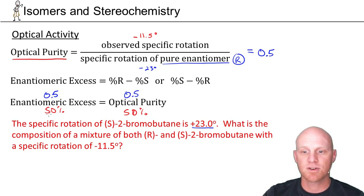We have a 50% enantiomeric excess of R. What that means is if we take the percent R minus the percent S, we'll get 50%. There's 50% more R than S.